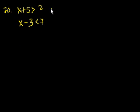Well, for this top one, let's just subtract 5 from both sides of this equation. So if you subtract 5 from both sides, you get x is greater than what's 2 minus 5? x is greater than minus 3.